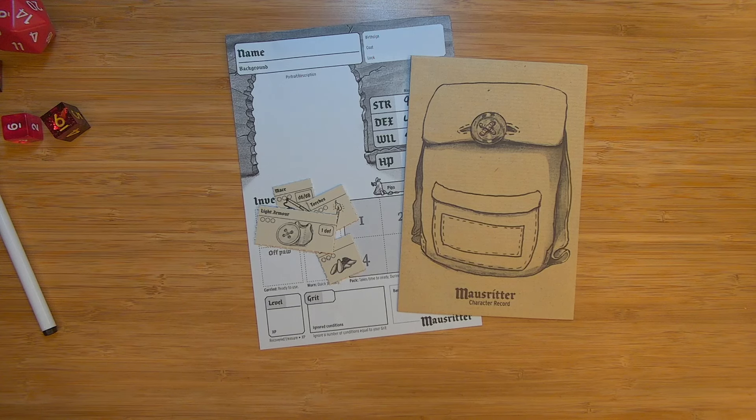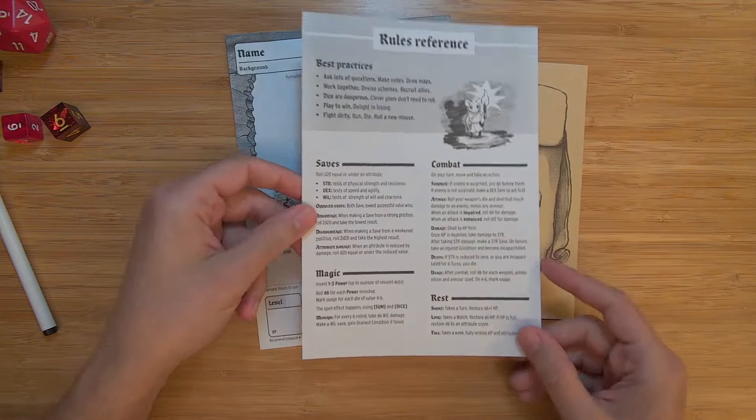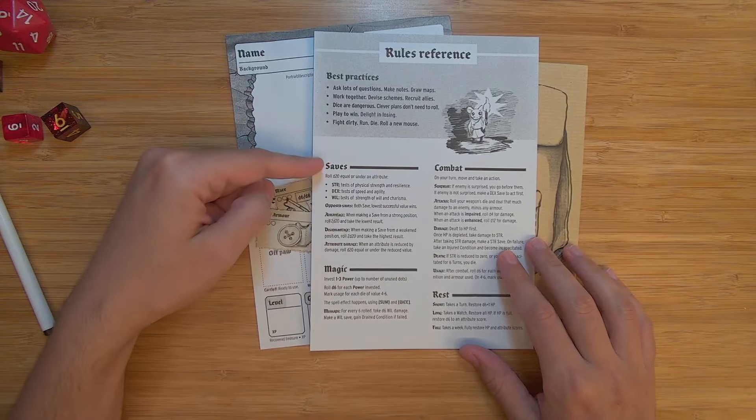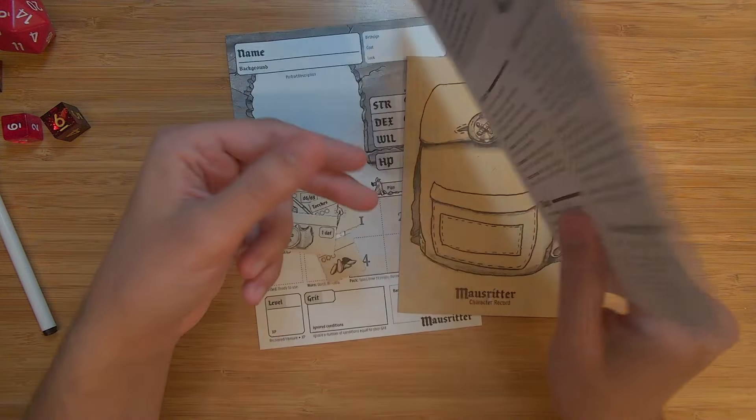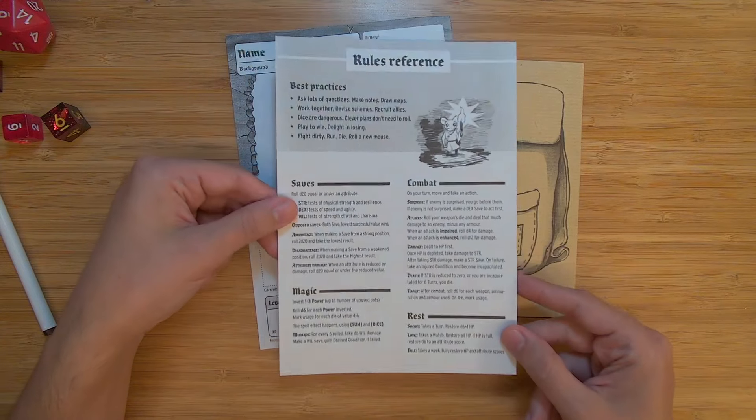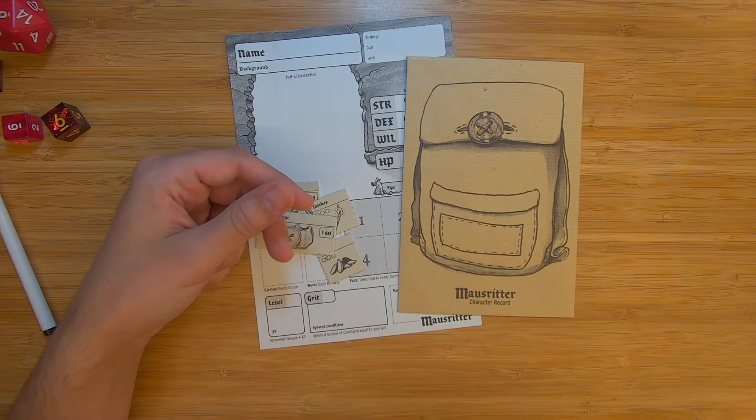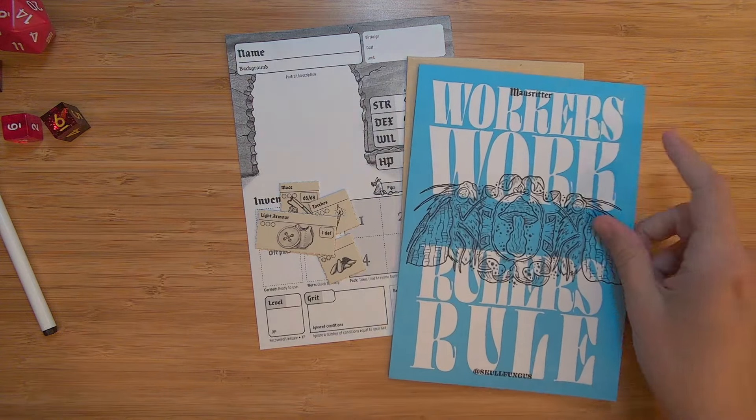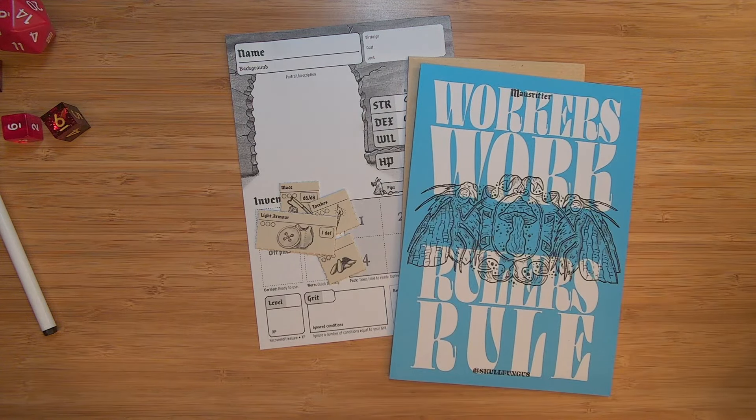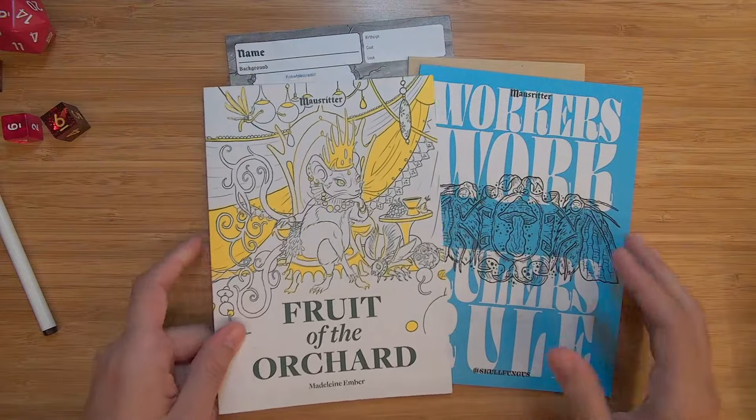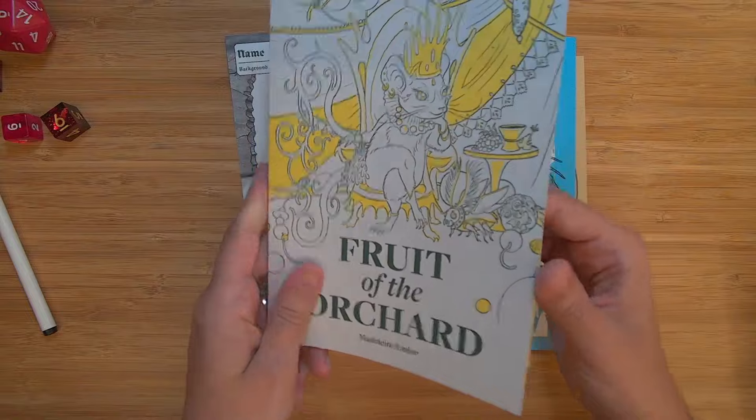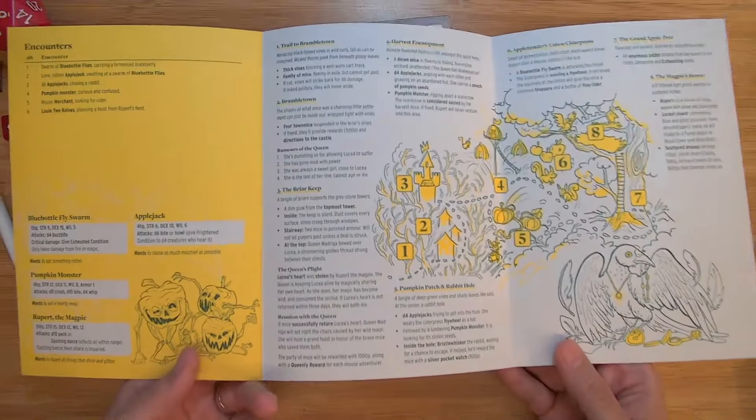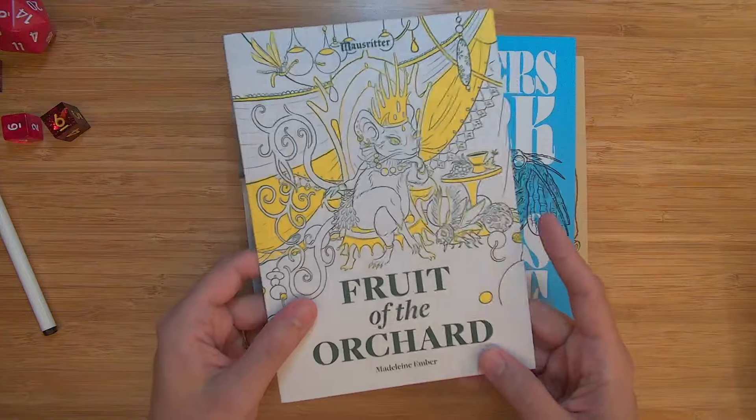The last thing that I want to go over real quick is, two last things. There is a really nice quick rules reference, best practices, ask questions. Here's how saves work. Here's how magic works. Here's combat. So, couldn't be any simpler and it's not even two sided. It's just one sided. There's a half a sheet of paper. This is how you play Mouse Ritter. So I love how you can just pick this up instantly, essentially. And this is what a Mouse Ritter adventure looks like. So we've looked at the rules. We looked at the character sheet and this is what a Mouse Ritter adventure looks like. And each one is super thin, this whole thing is an adventure and that's all you need to run an adventure in Mouse Ritter. So the front is a beautiful piece of art. This was written by Madeline Ember and on the back is a flavor.